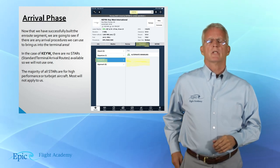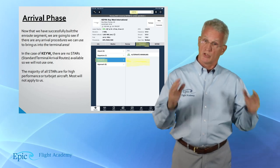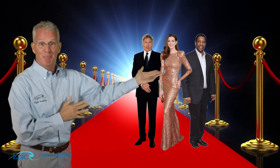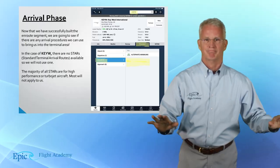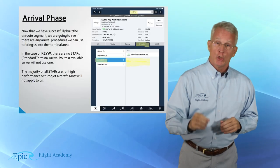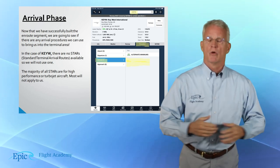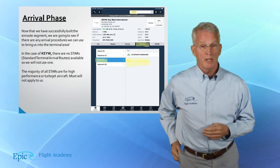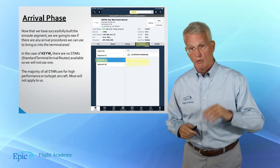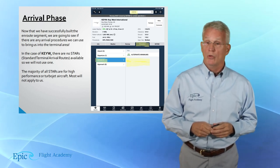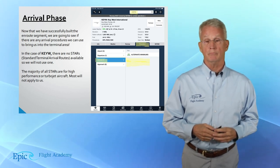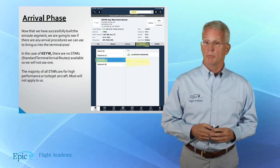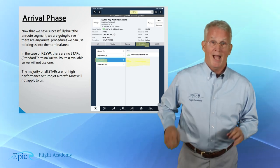So what's our first consideration with arrival? Are there STARs — Standard Terminal Arrival Routes? Refer to an earlier video to look at STARs in detail. The majority of STARs are for high-performance or turbojet aircraft and may not apply to you if you are in a Cessna 172. Finally, take a look at what instrument approach procedures are available at the airport.